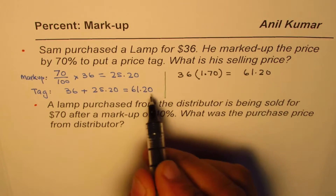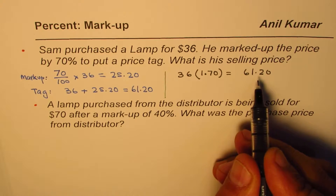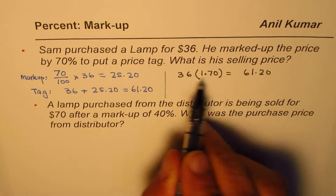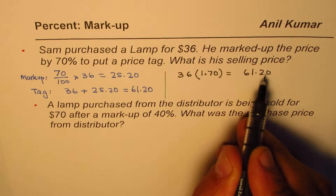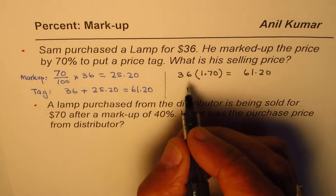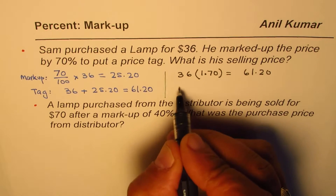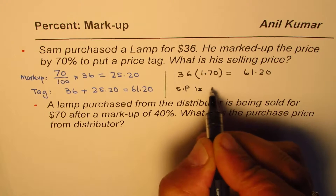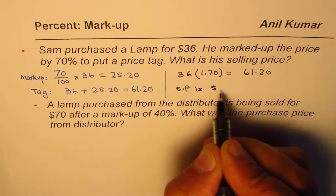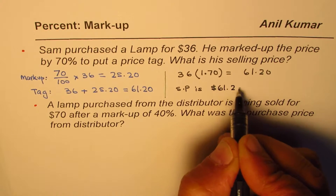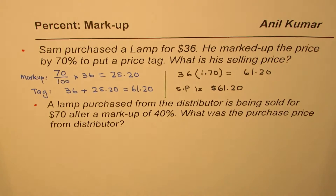In both cases we get the same price. This second method is like one statement which gives you the result directly. So we can say that the selling price is $61.20. Now let's look at the next question.